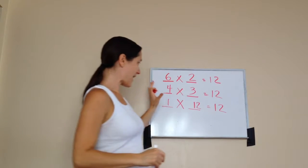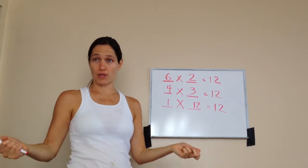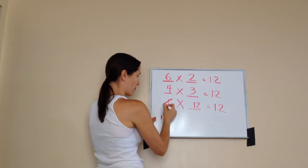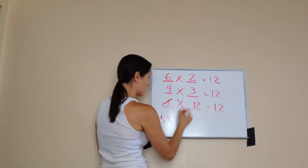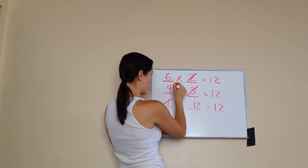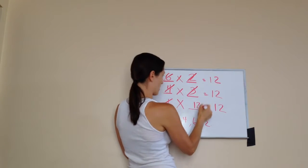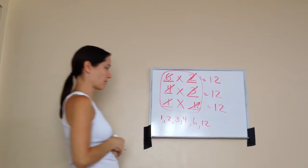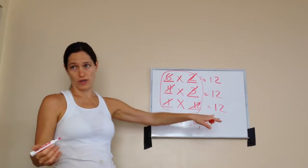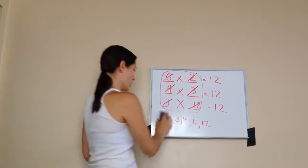So what I want you to do is once I figure out all these different factors that equal 12, then you're just going to write them in order from 1 to the end. 1 is a factor of 12. 2 is a factor of 12. 3 is a factor of 12. 4 is a factor of 12. 6 is a factor of 12, and 12 is a factor. So I say the factors of 12 are 1, 2, 3, 4, 6, 12. That's how I'll actually write the factors of a number.